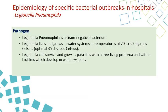The pathogen is a gram-negative bacteria that can live and grow in water systems, even at higher temperatures like 20 to 50 degrees Celsius. Legionella can survive and grow in parasites like protozoa and within the biofilm that covers the inside lining of water systems.